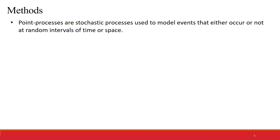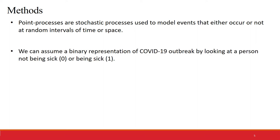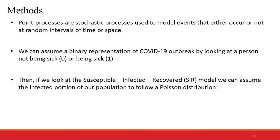Methods. We'll be using a point process model to estimate the number of new cases in a population of Brazil. We can assume a binary representation of COVID-19 if we look at a person not being sick or being sick. Then we'll be using the SIR model to consider the infected portion of our population to follow a Poisson distribution.